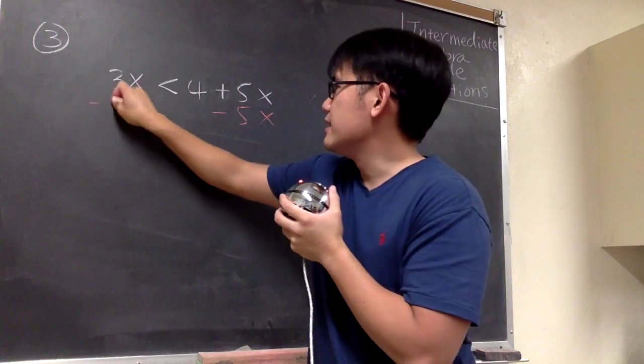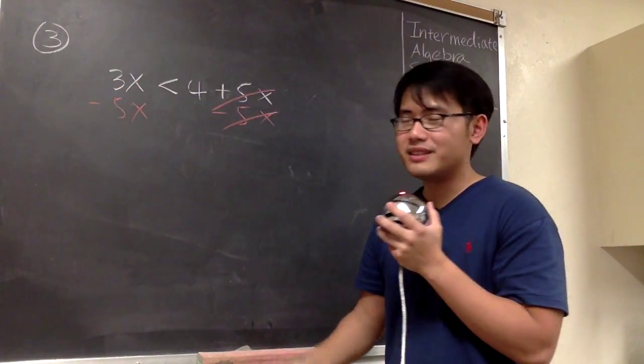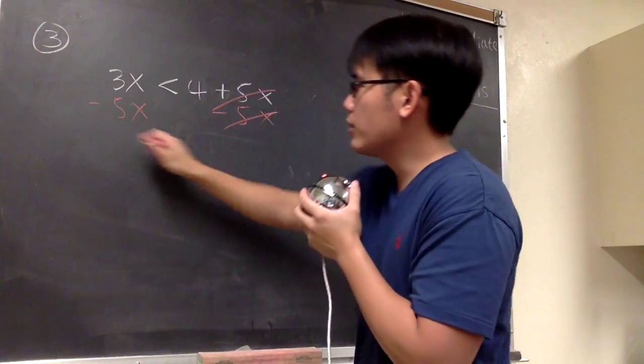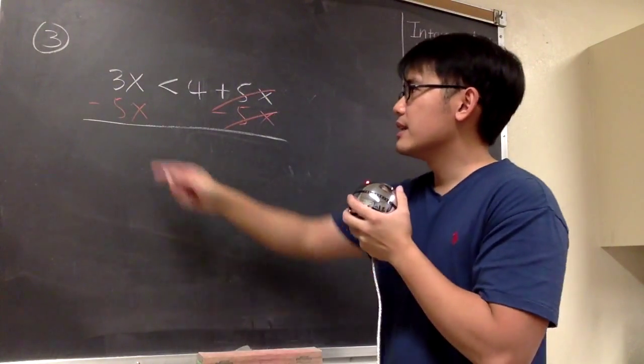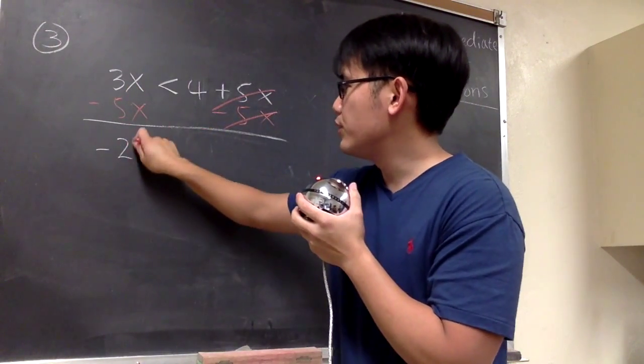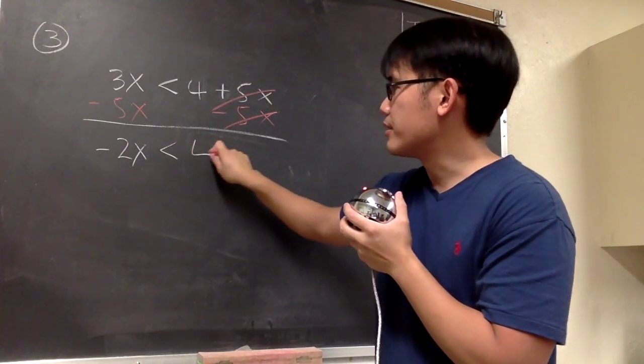As I said, this is just a good habit whenever we are trying to solve inequality. The positive 5x and the minus 5x cancel. We will see that 3x minus 5x gives us negative 2x. Then we maintain the less than and the number 4.